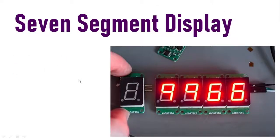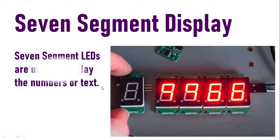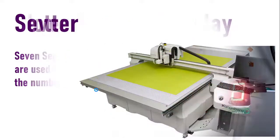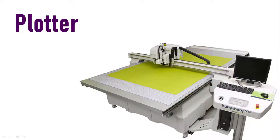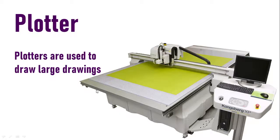Seven Segment Display. This is another type of display — seven segment LEDs are used to display numbers or text. Plotter. Plotters are used to make large drawings, like engineering drawings, and we can use the plotter for that purpose.